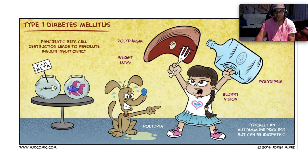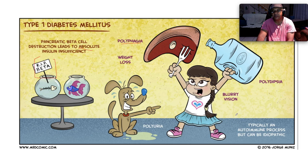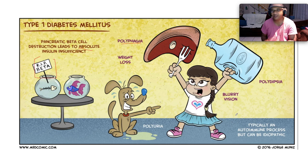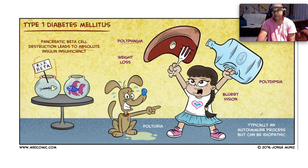In this pictorial representation, type 1 diabetes involves pancreatic beta cell destruction leading to absolute insulin deficiency. Patients classically present with polyphagia, weight loss, polydipsia, blurry vision, and polyuria. Many patients with type 1 diabetes present for the first time in the form of diabetic ketoacidosis, which will be covered in a subsequent video.